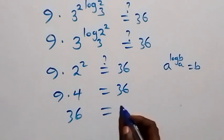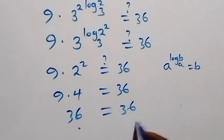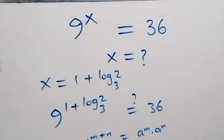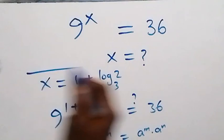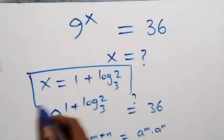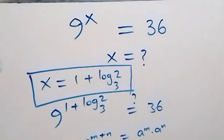9 times 4 equals 36, which equals 36. The left-hand side equals the right-hand side. We conclude that x equals 1 plus log 2 base 3 satisfies the given problem. Thank you for watching — don't forget to subscribe for more videos, turn on the notification bell, share this video, give a thumbs up, and leave a comment. See you next class!